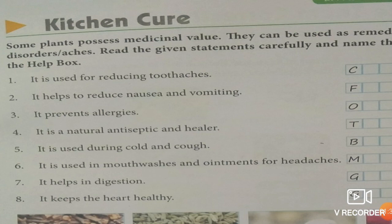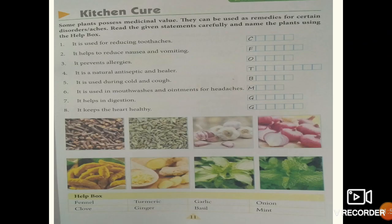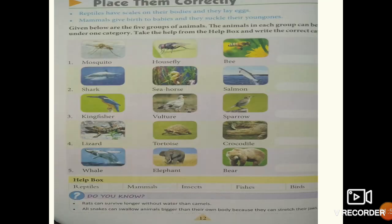For headaches, the answer is mint. Ginger helps in digestion. Garlic keeps the heart healthy. You have to fill in the blanks with the help of the help box given below — this is Kitchen Cure, page number 11.